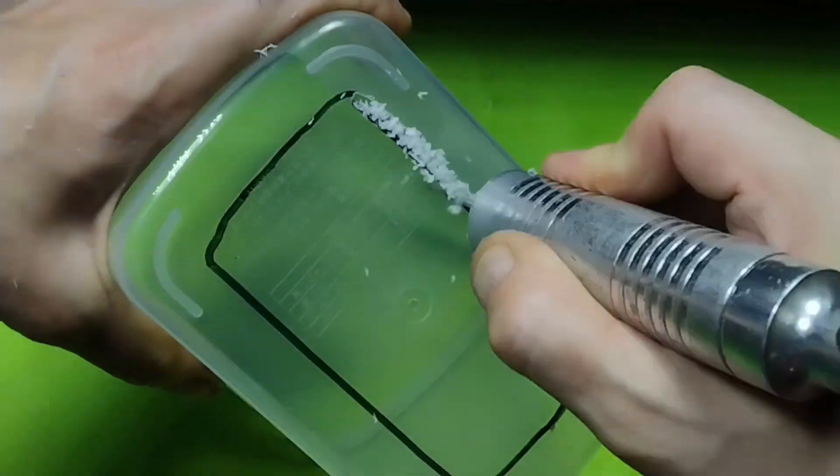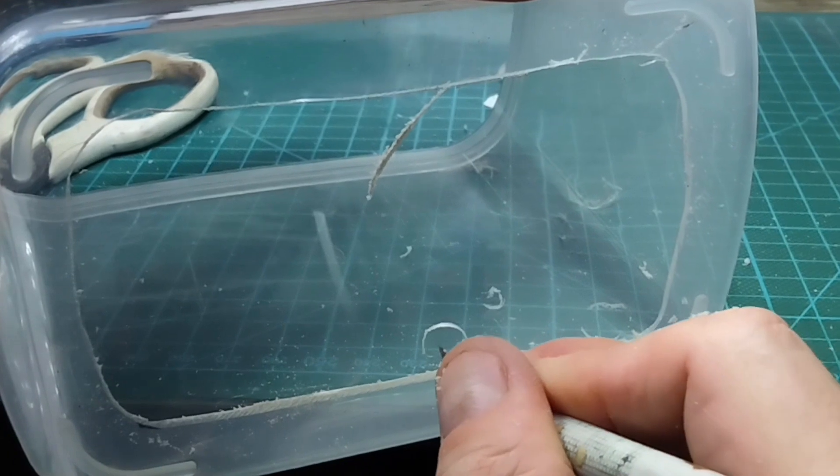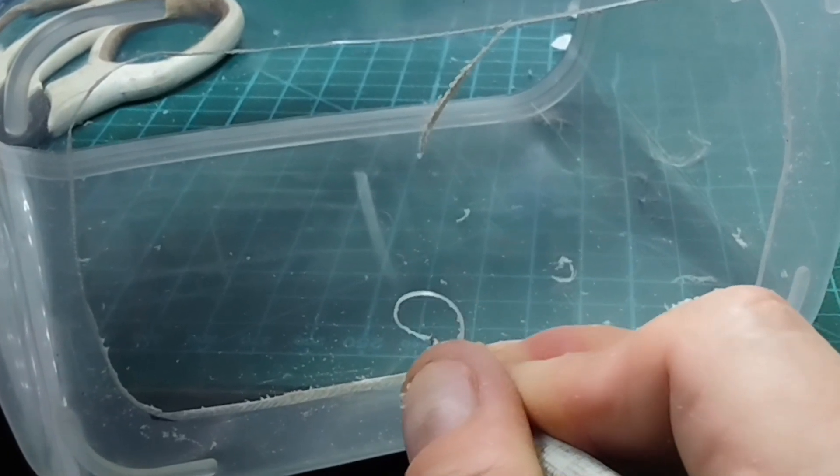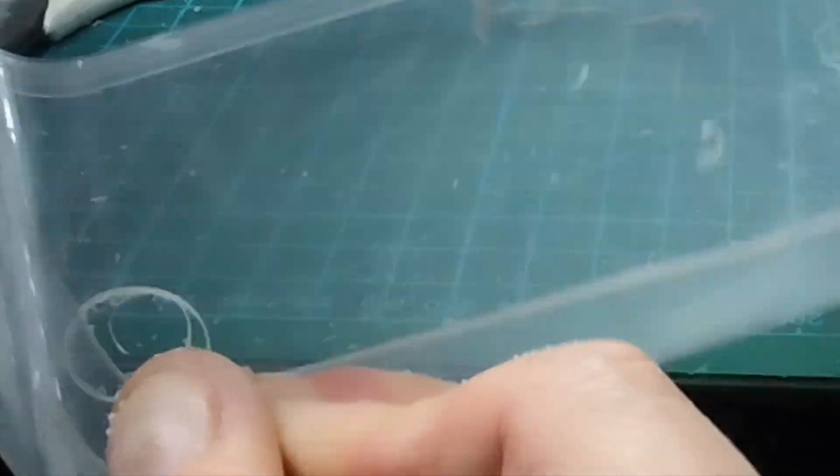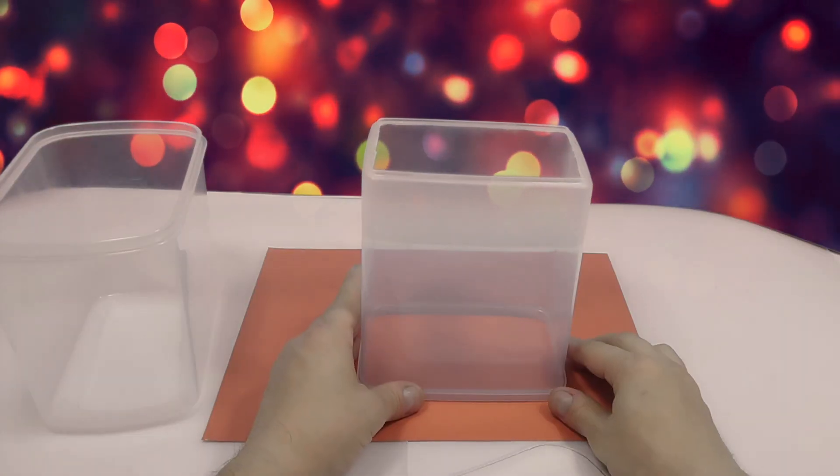Then I cut the inside filter container leaving more room around the edges than before. This will ensure a good seal for the filter. A little clean up and now let's fit everything together.